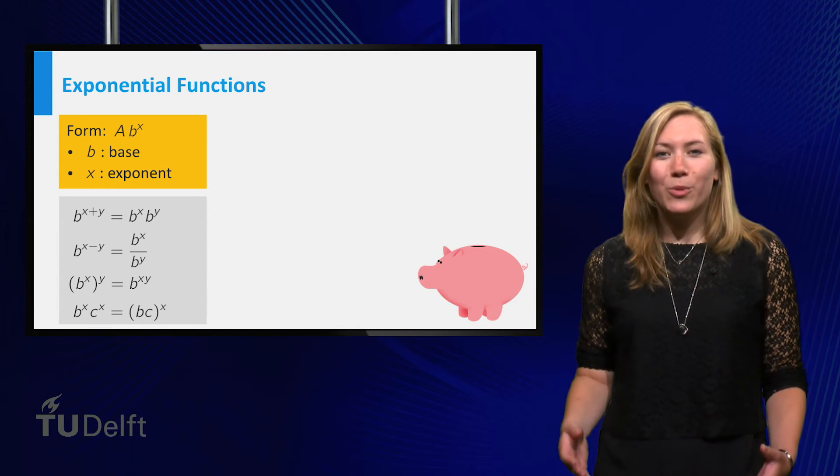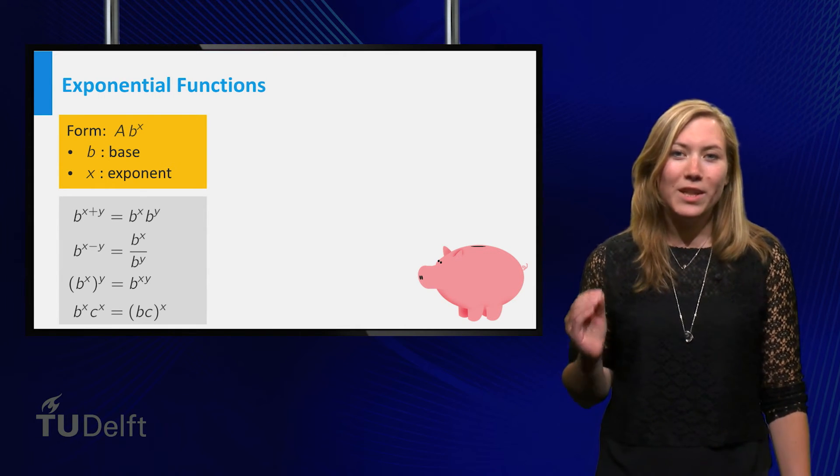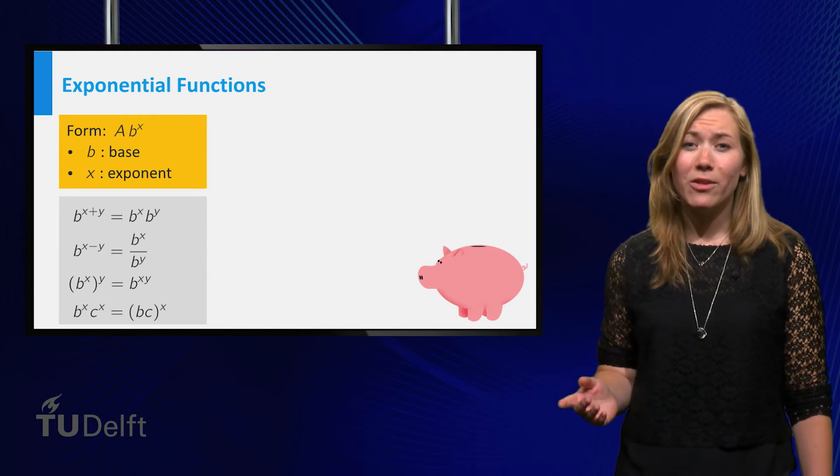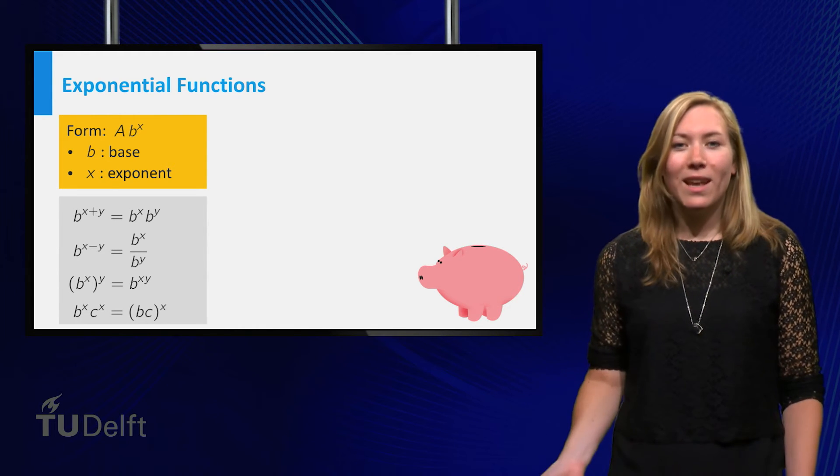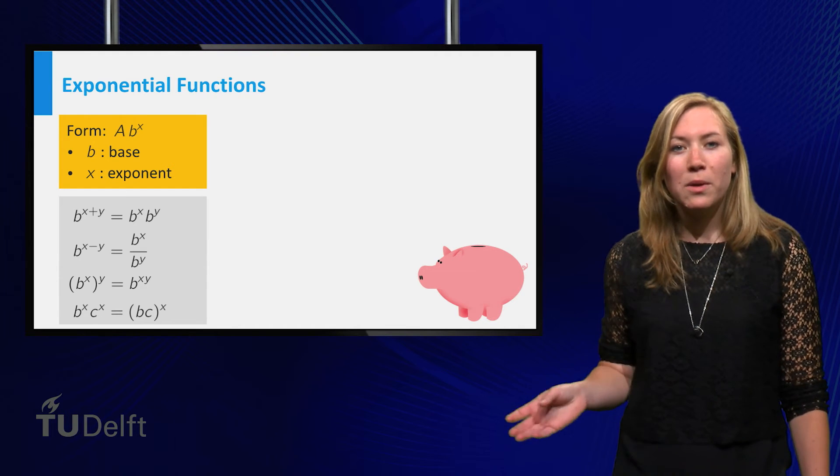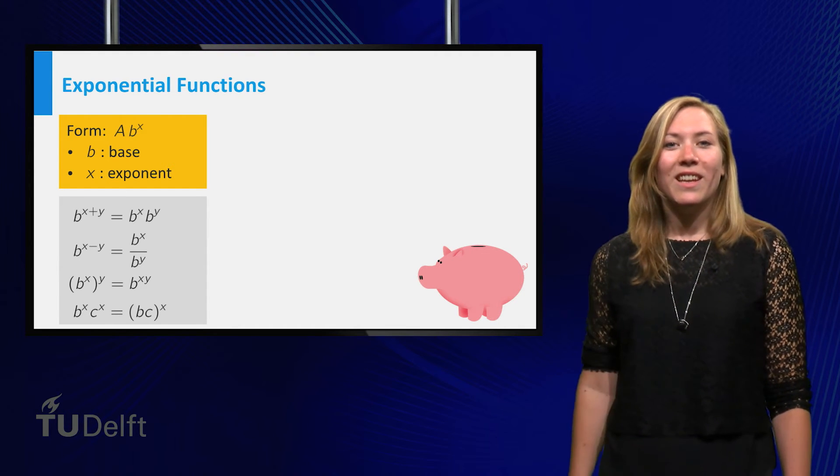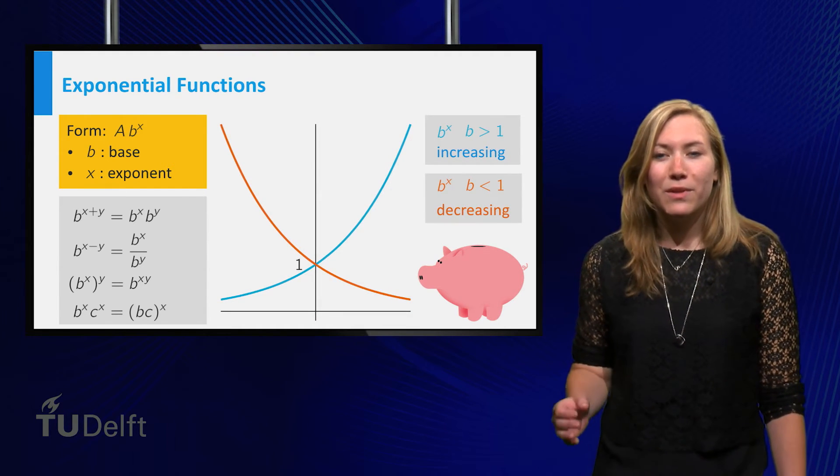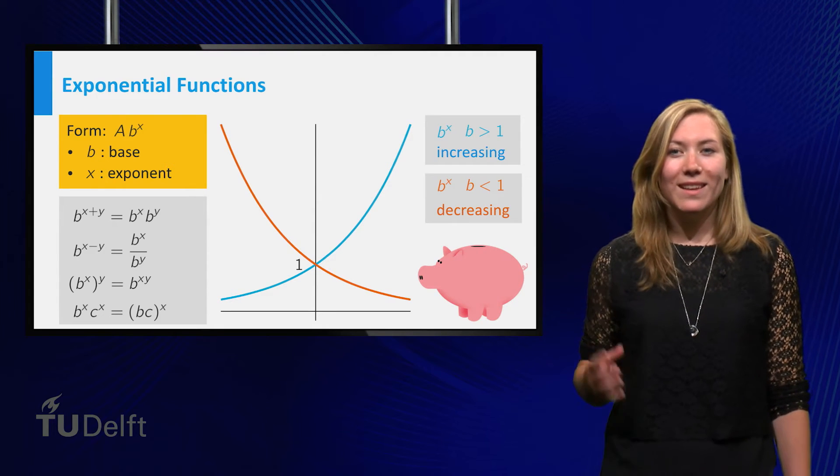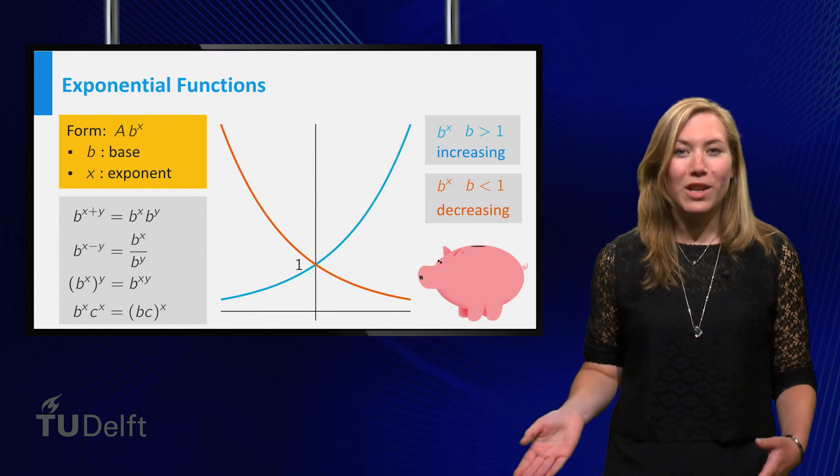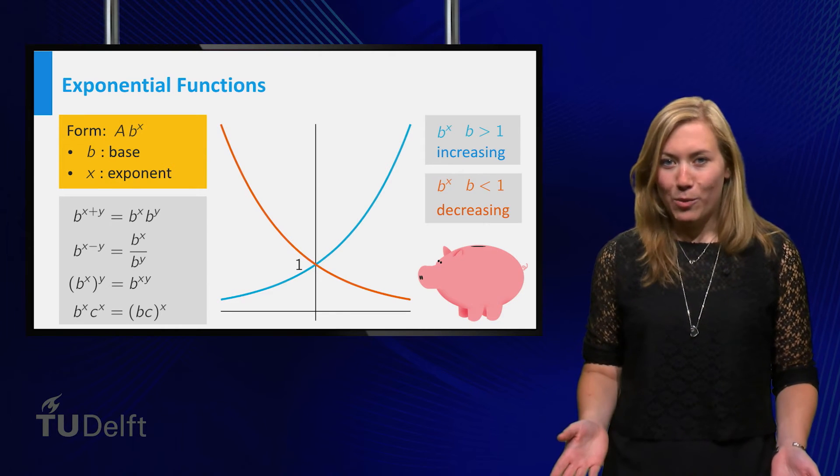Using these rules of calculation, we can also define the exponential functions for exponents x, which are rational, negative and even arbitrary real exponents. The graph of the exponential function b to the power x is increasing if b is larger than 1, and decreasing if b is smaller than 1.